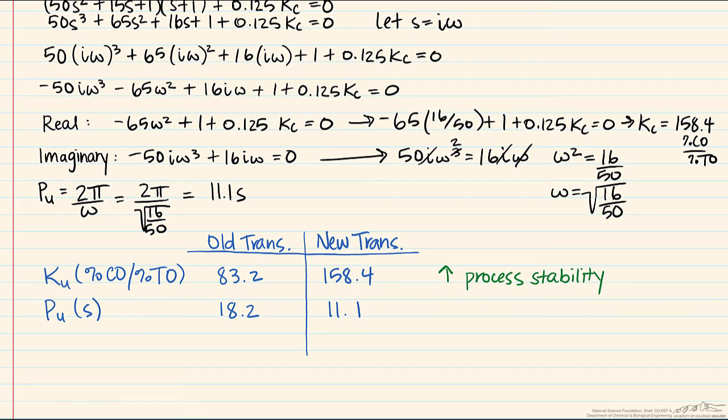The important take-home point is not only the fact that stability changes, but also the fact that by making any small change, here just making a change in a sensor transmitter, changes the dynamics of how your process acts, which will in turn lead to a difference in how you tune your process.